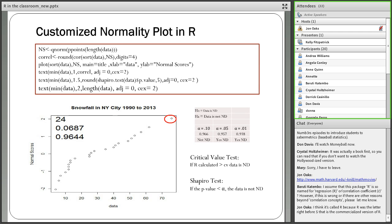Looking at the output with the critical values from the table: at 10% significance the data is not normally distributed, which also corresponds to what the Shapiro test tells us. At 5% the data is normally distributed, and at 1% it is also normally distributed. I always like students to do the objective critical value test rather than just subjectively assessing whether data falls in a straight line.